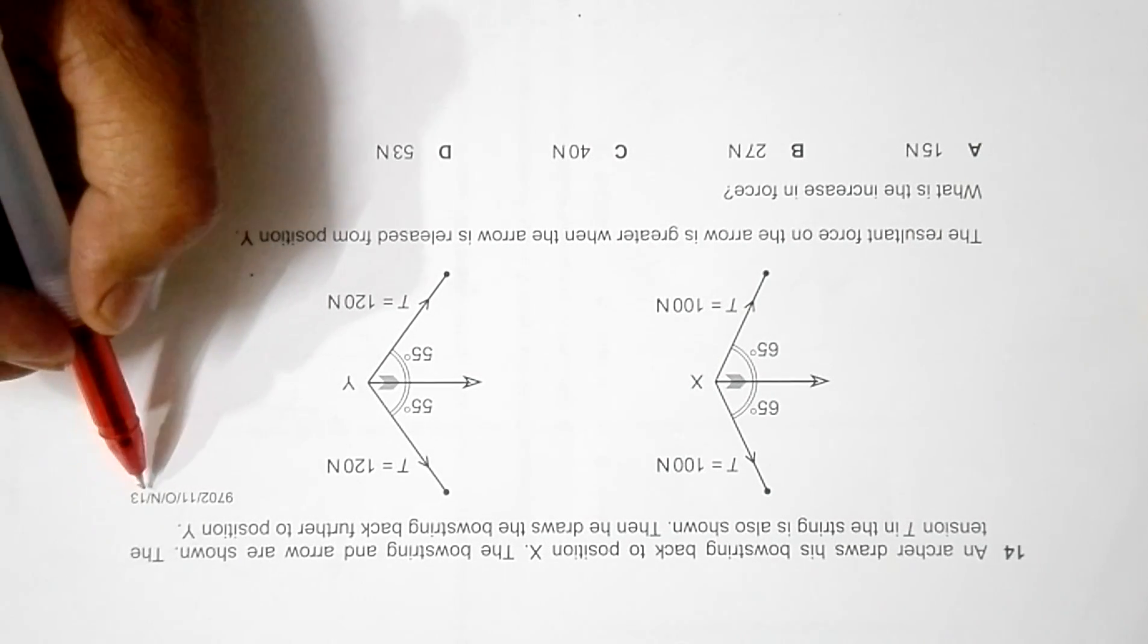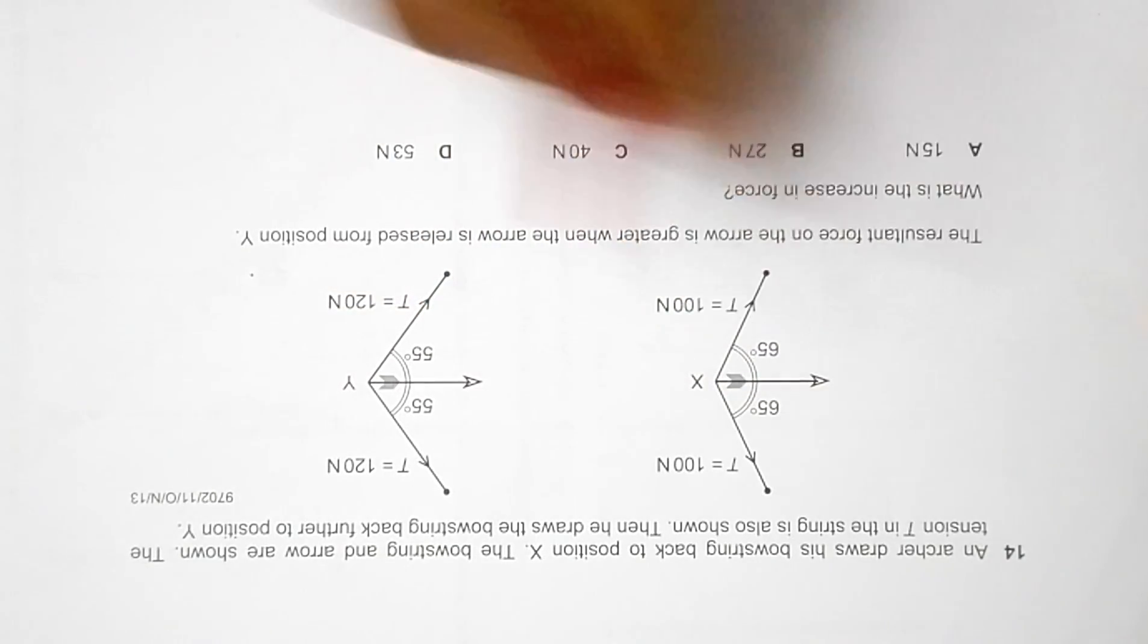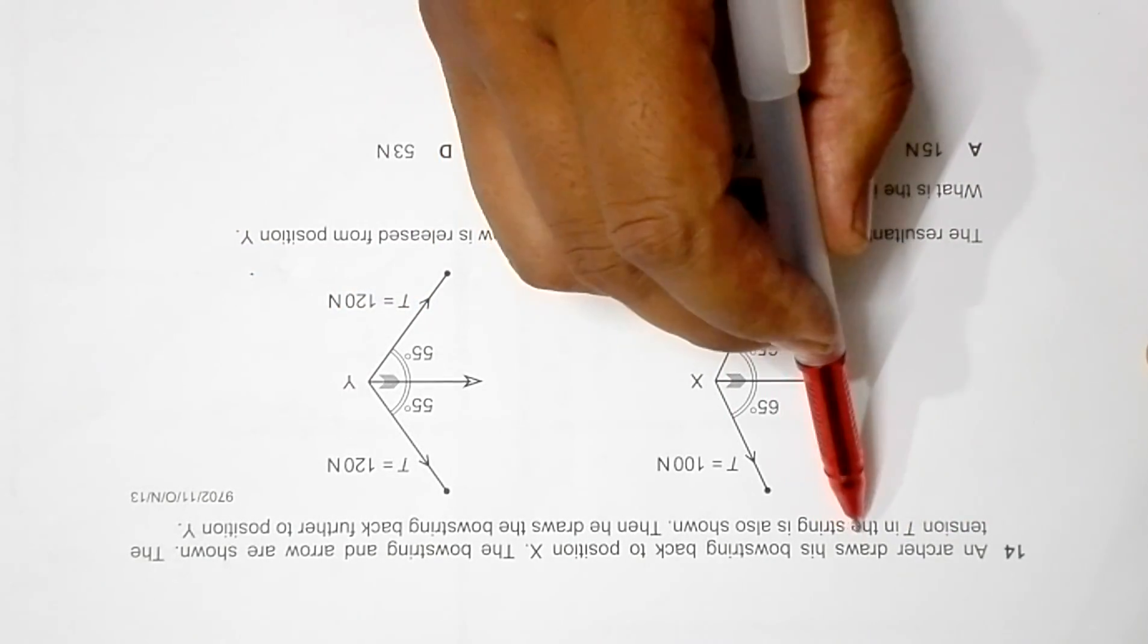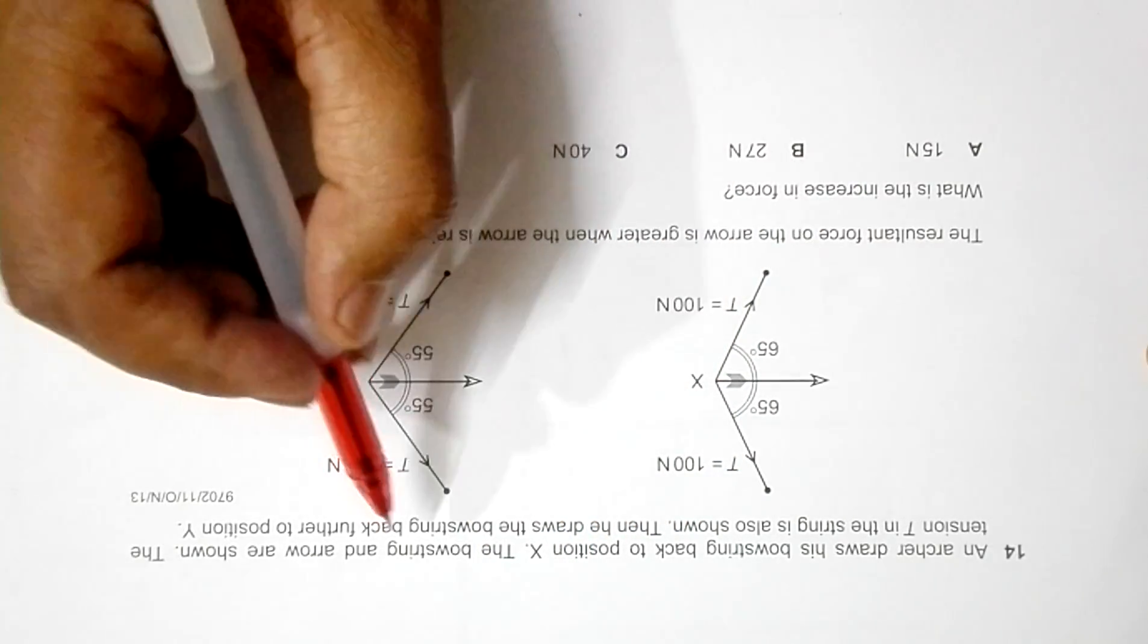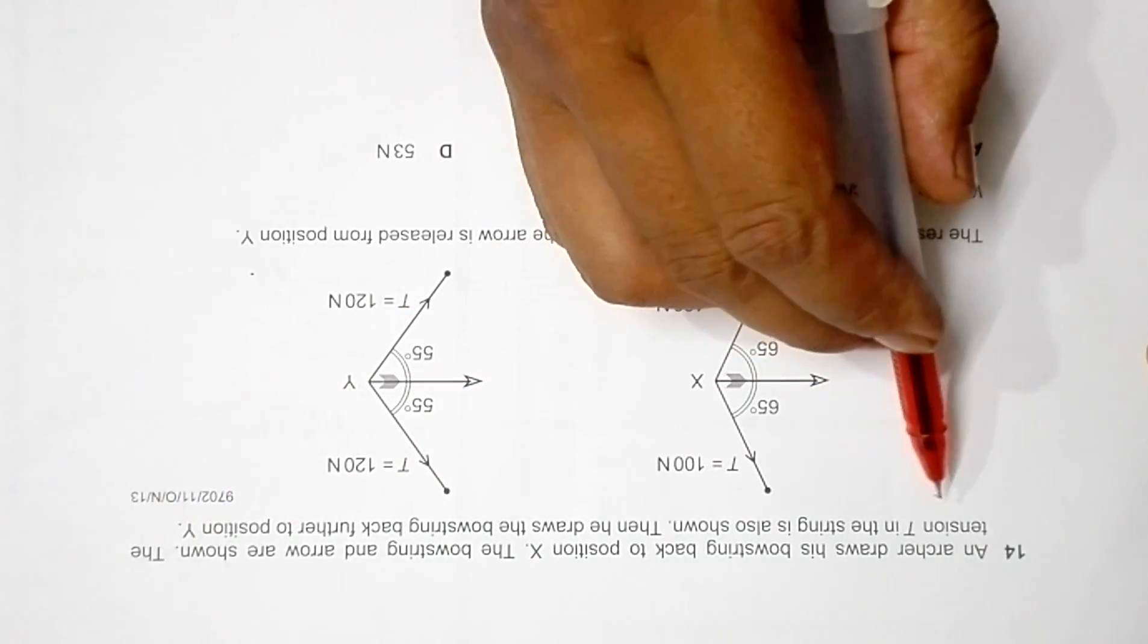This is question 14 from the 2013 October November paper 1. An archer draws his bow string back to position X. The bow string and arrow are shown, with the tension T in the string also shown.